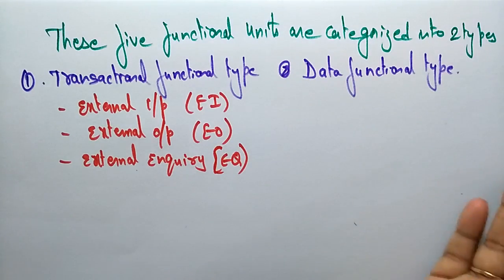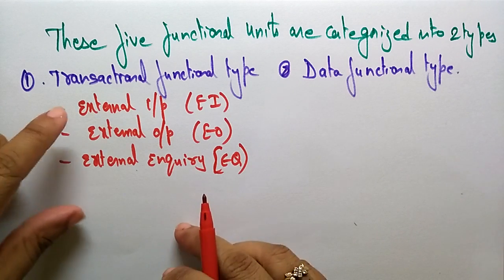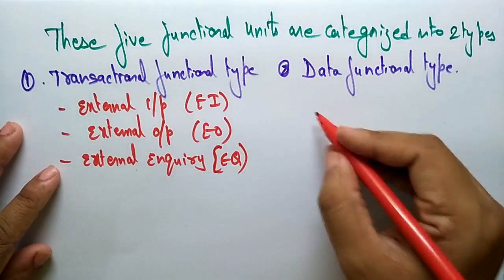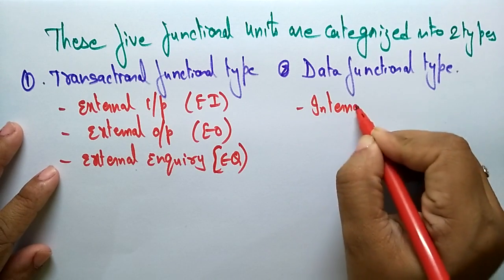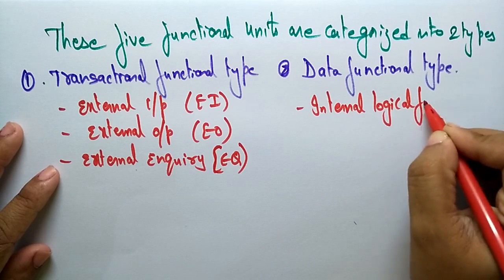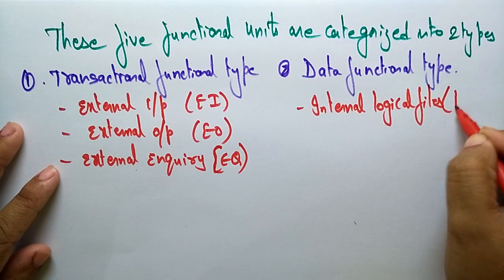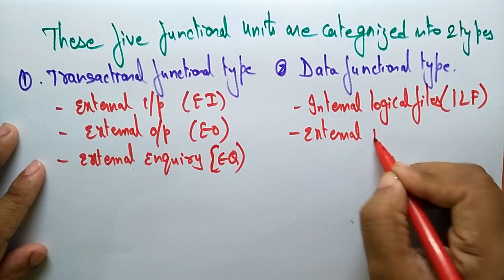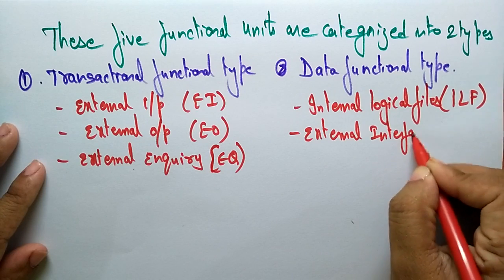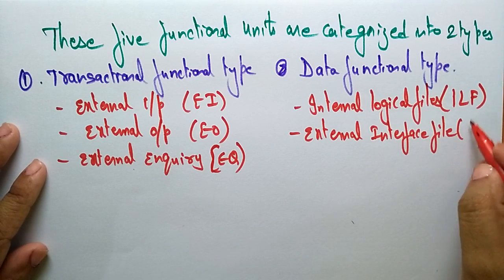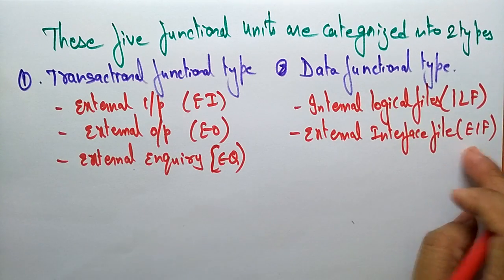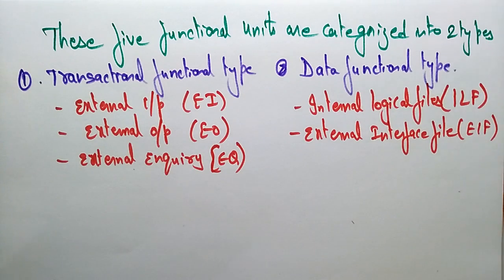We are transacting the functions, so we have to calculate external input, external output, and external enquiries. For data functional types, these come under Internal Logical Files (ILF) and External Interface Files (EIF). These two come under the data functional type, where data information will be passed through internal logical files and external interface files.